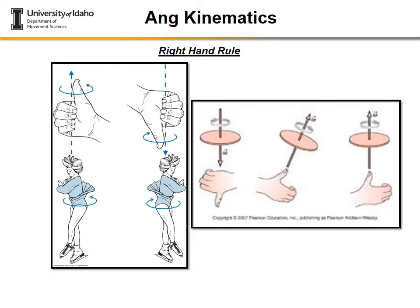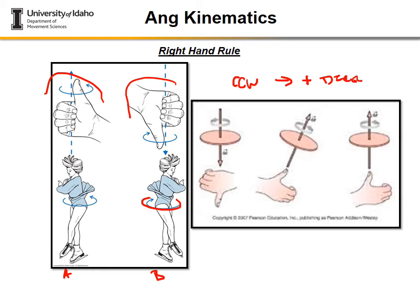The right-hand rule is a way to determine the direction of angular momentum and identify the third orthogonal component based on the orientation of the fingers and thumb. Looking at motion A versus B, A is counterclockwise. For angular motion, unless told otherwise, always assume counterclockwise motion is in the positive direction in 2D. This is a very important convention to carry forward.